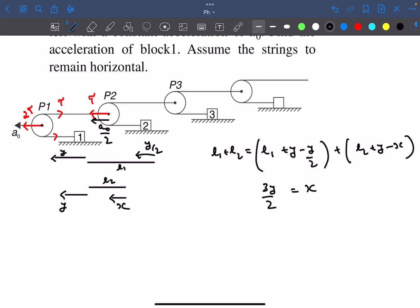Now if you differentiate this equation twice, d²y upon dt² is simply the acceleration of this pulley which is A0, and this should equal the acceleration of the block which is A. So from here A comes out to be 3 by 2 A0, and as it comes out positive, the direction we assumed which was towards the left is correct. So the acceleration of block 1 is 3 by 2 A0 towards the left.